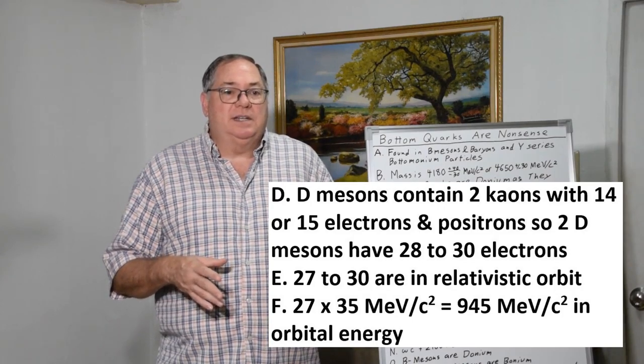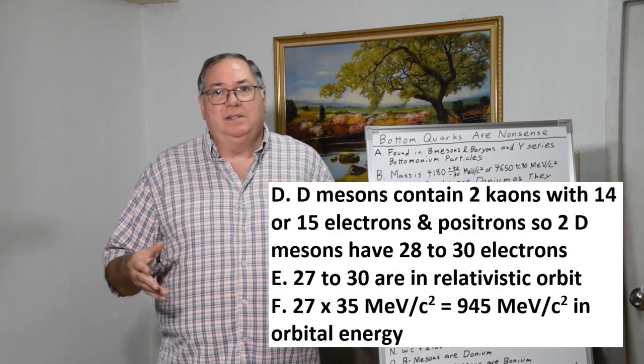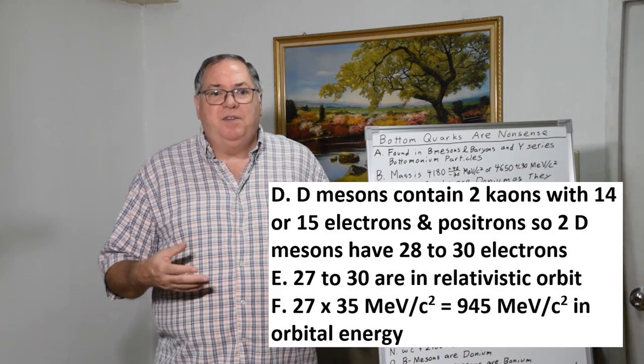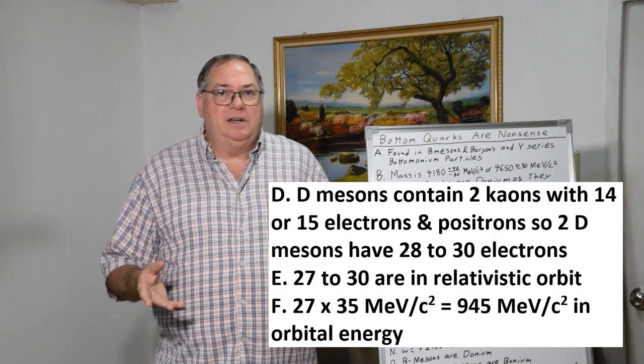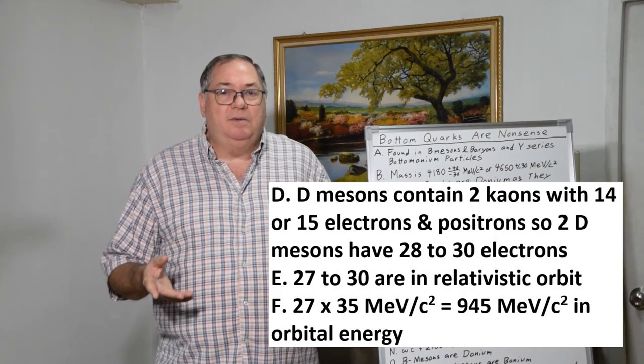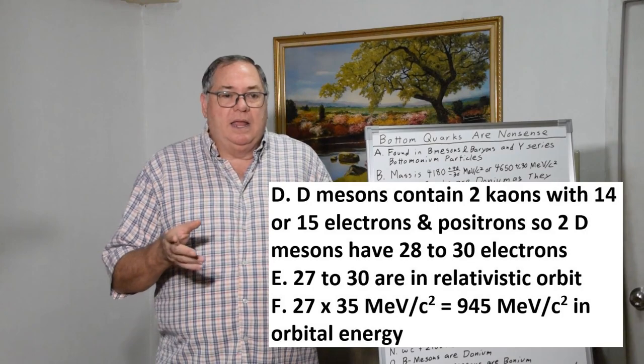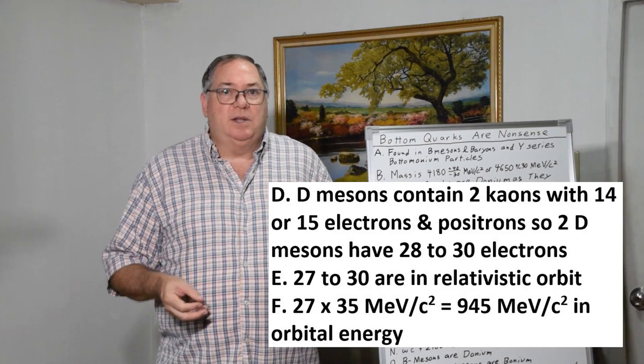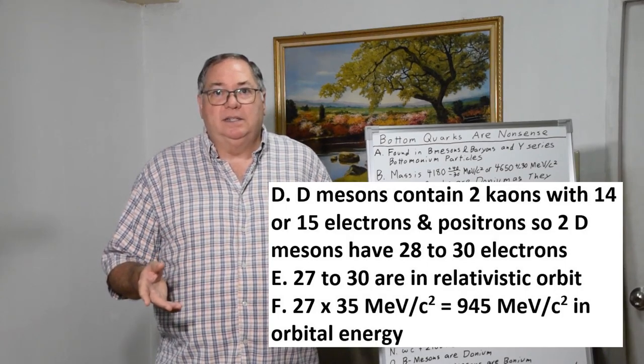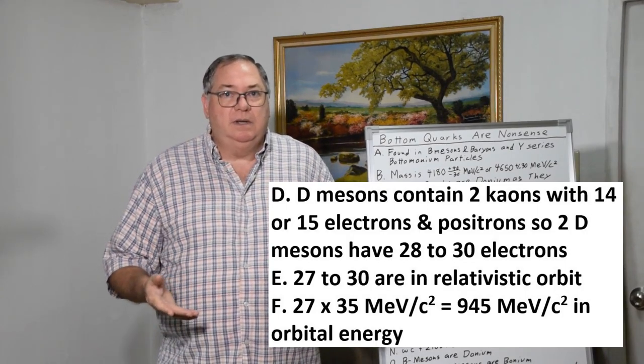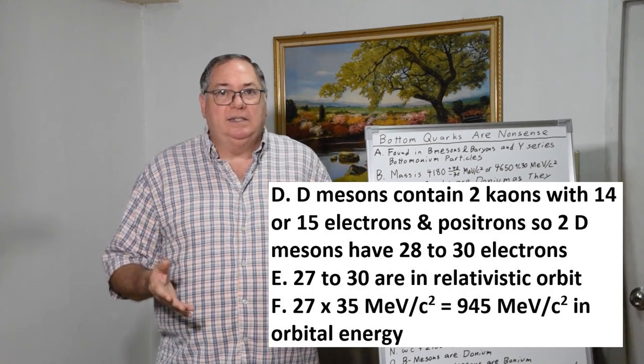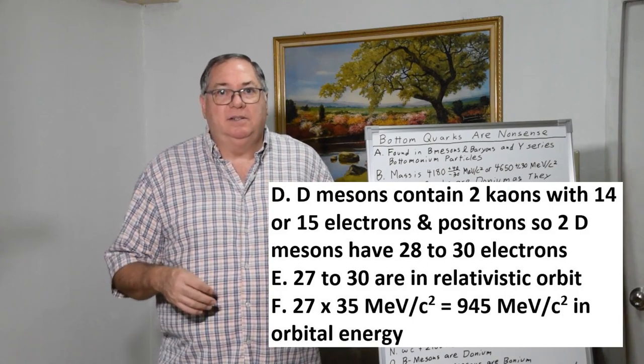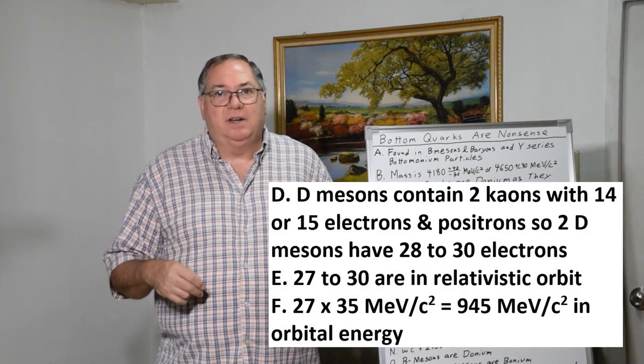Sometimes the central electron's not relativistic, so you can have between 27 to 30 relativistic electrons. This gives you a range of additional mass energy using the onium model where you have steps of 35 MeV/c² as the quantization of all the resonances, which is known. It's known that it's quantized as a fraction of the mass of the electron divided by the fine structure constant.